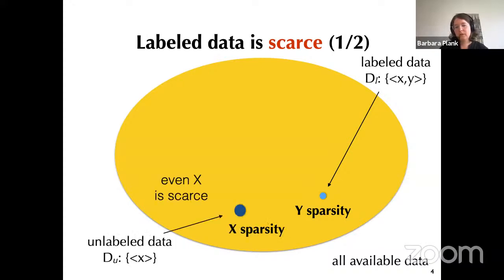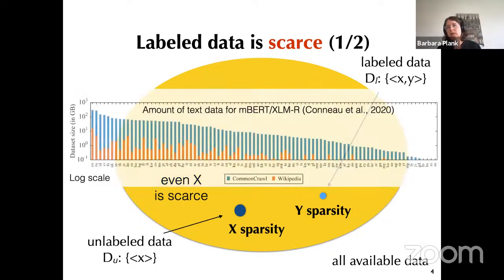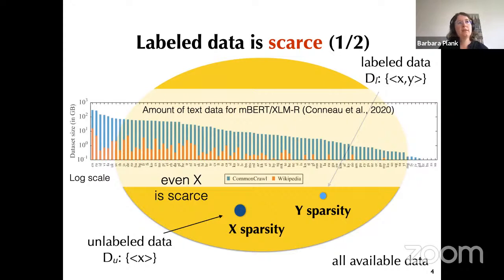At the same time, even unlabeled data can be very sparse. For instance, multilingual BERT or XLM-R are trained on data where English has terabytes of text on a log scale, but for low resource languages there is very, very little even unlabeled data out there. So even the input X can be sparse — I'll come back to this in one of the case studies later.